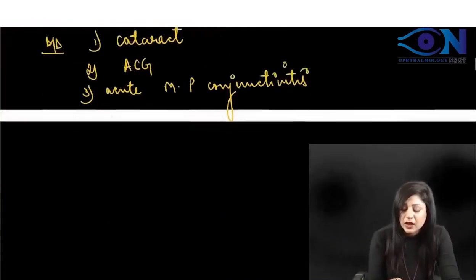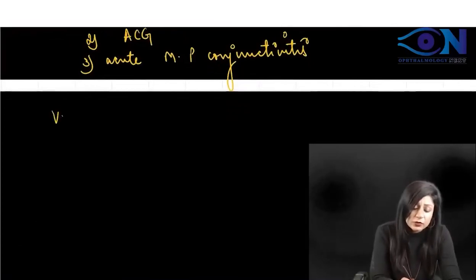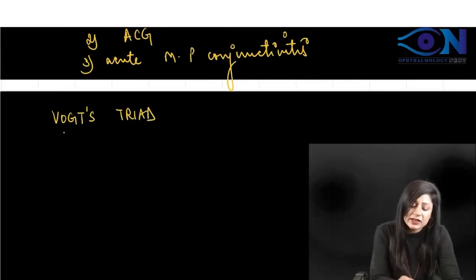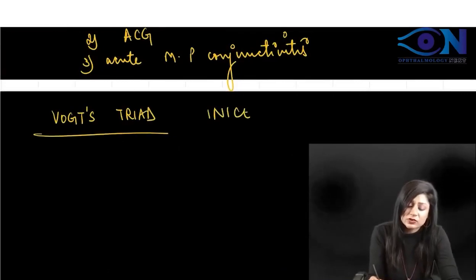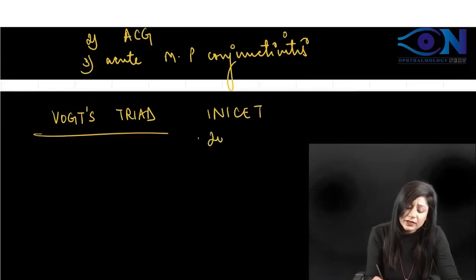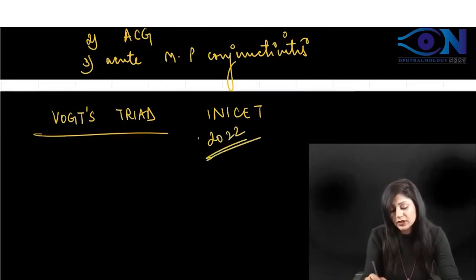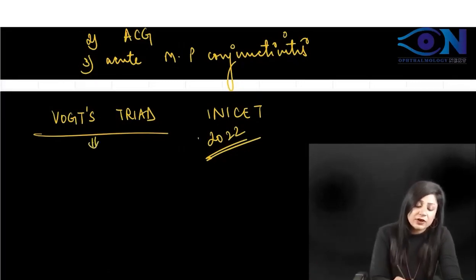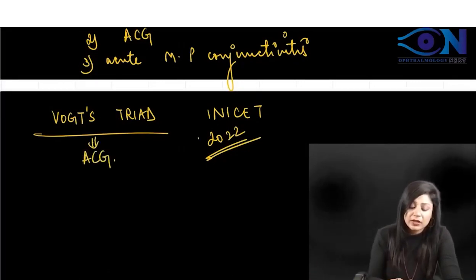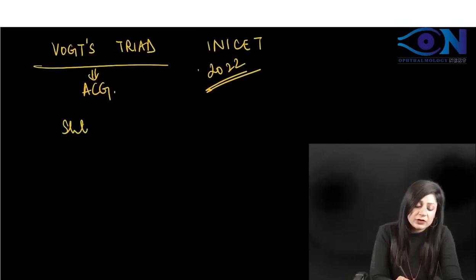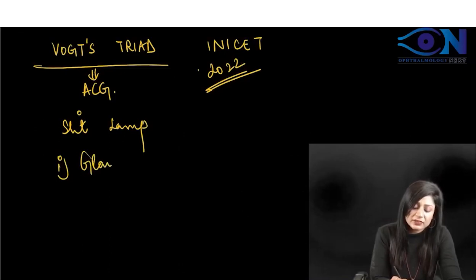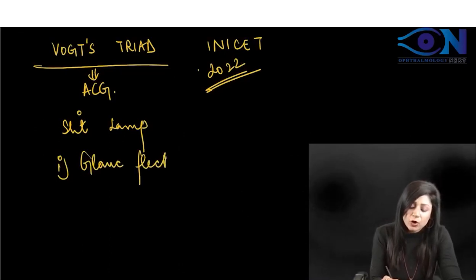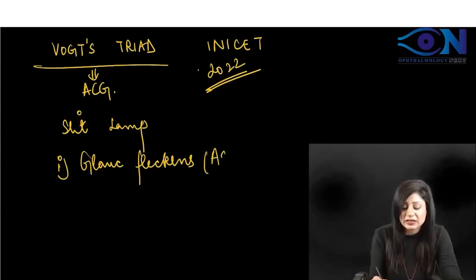Once you are sure, you can look for the Vox triad. This was an exam question in early 2022 — they asked where it is found. Vox triad is found in acute congestive glaucoma and is seen over the slit lamp. The first component is glaucomflecken, which means anterior subcapsular cataract.